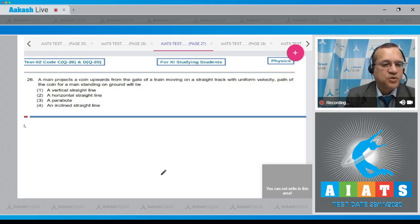Question number 26: A man projects a coin upwards from the gate of a train moving on a straight track with uniform velocity. The path of the coin from a man standing on the ground. Now from the moving train, which is moving in this direction, let's say, and from here is throwing the stone into the air like this one.